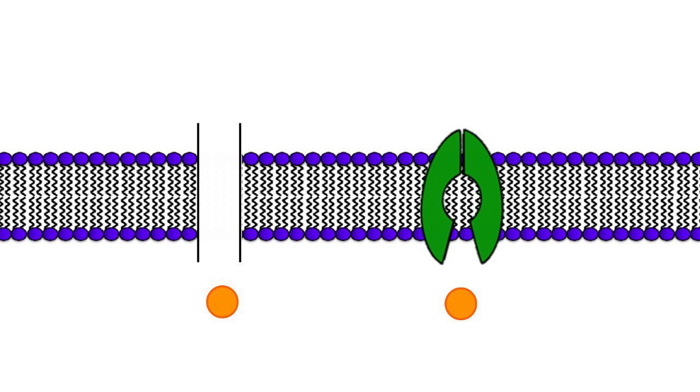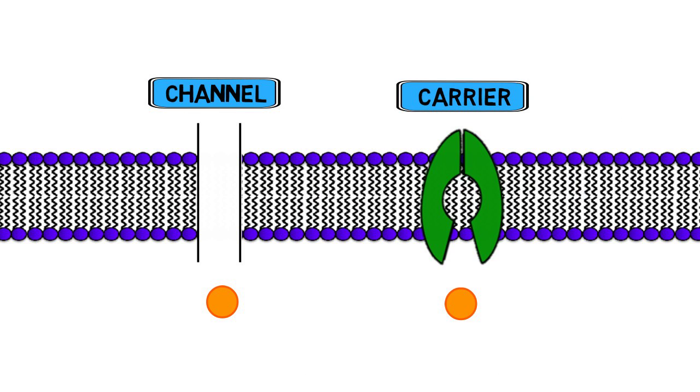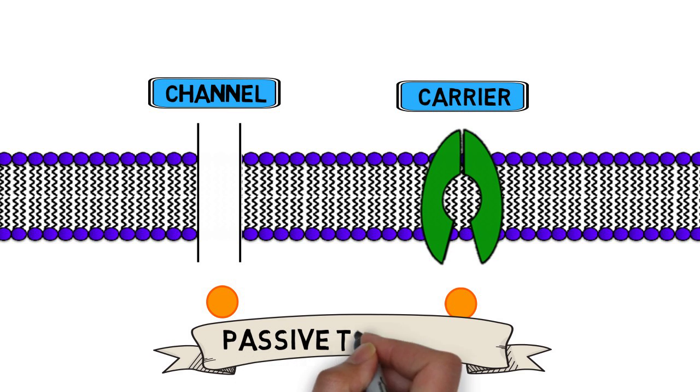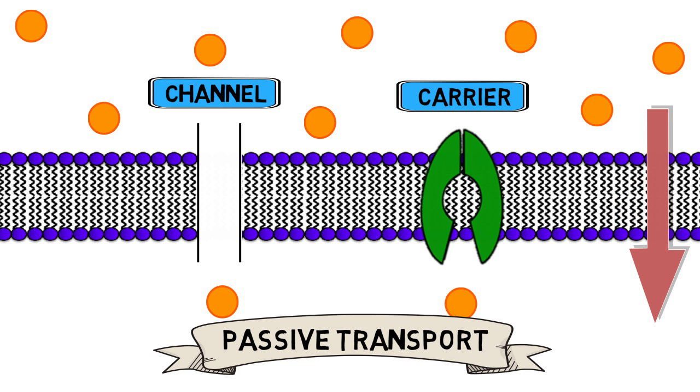The channel and carrier proteins are two typical types of membrane transporters playing a role in passive transport. And the key characteristics of passive transport always involve a molecule moving from a region of high concentration to a region of lower concentration, hence no input energy is required.